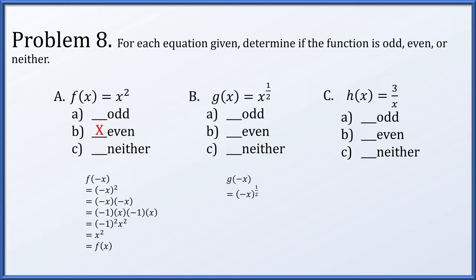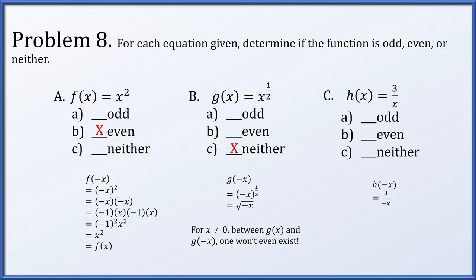For g(x) = x to the 1/2: g(−x) = the square root of minus x. If x is not zero, either x is positive and minus x is negative, or vice versa — one of root x or root minus x won't even exist. So neither the even nor odd condition holds; this function is neither odd nor even. For h(x) = 3 over x: h(−x) = 3 over minus x = negative 3 over x = minus h(x). Since h(−x) equals minus h(x), that's an odd function — the minus sign factored out.